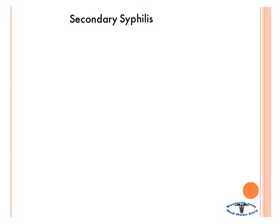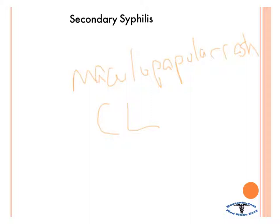In secondary syphilis, you get that spirochete that's in the painless chancre, and it disseminates throughout the body. So you get a maculopapular rash, as well as condylomata lata — which are painless mucosal warty erosions that you see all over the body. Again, they're painless, just like the chancre. If you were to biopsy these condylomata lata, you'd be able to see the spirochete under dark field microscopy. Secondary syphilis is systemic.